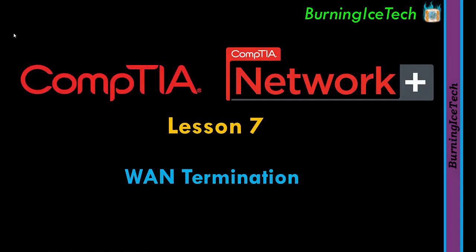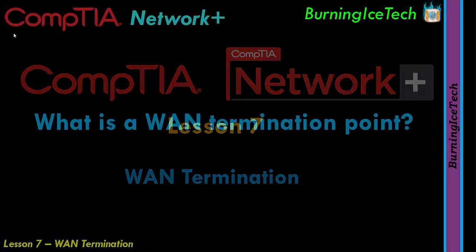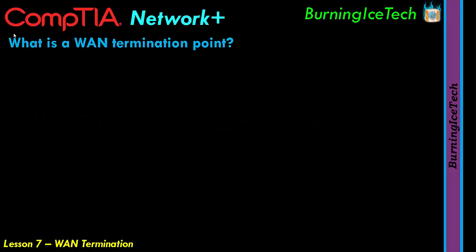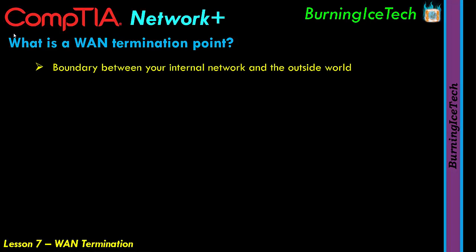In this lesson of the CompTIA Network+ course we'll be discussing WAN termination points. A WAN termination point is basically the point where your provider's network stops and your network starts. In most countries, if you have something like fiber, the provider would normally bring the fiber line up to the outside of your house or office. That point is normally considered the termination point.